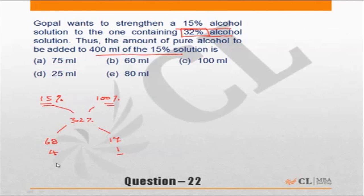For every 400 ml of 15% solution, you need 100 ml of 100% solution. So the correct answer here should be 100 ml.